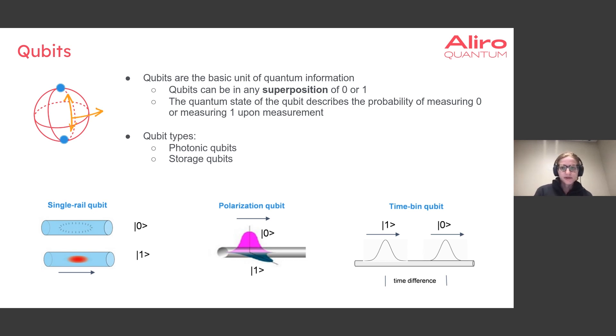This means they are neither zero and neither one, but kind of both at the same time. The quantum state of the qubit describes the probability that you will measure zero or measure one upon measuring the qubit.